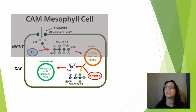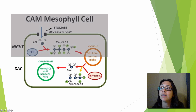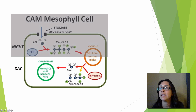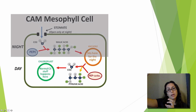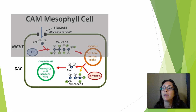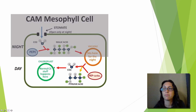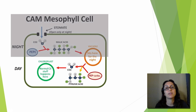Looking at the diagram: at night, stomata are open, carbon dioxide and PEP carboxylase form malate, and malate gets stored in the vacuole. During the day, malate is released and broken apart, carbon dioxide is released, and it enters the Calvin cycle where Rubisco connects it to RuBP to go through the entire cycle and create sugar.